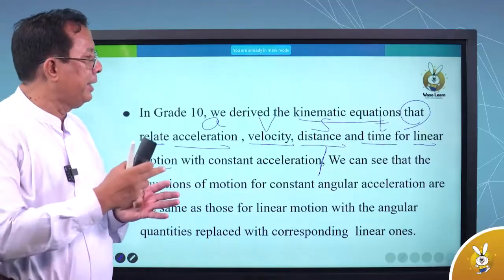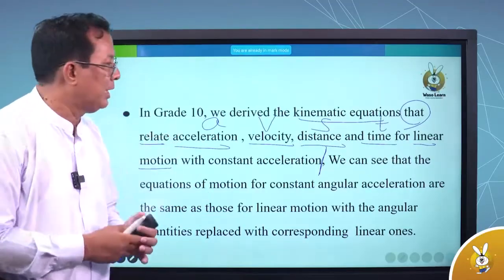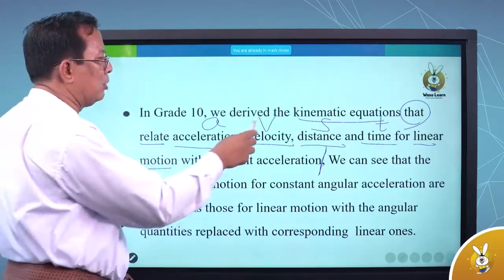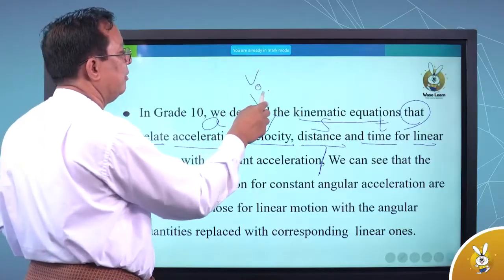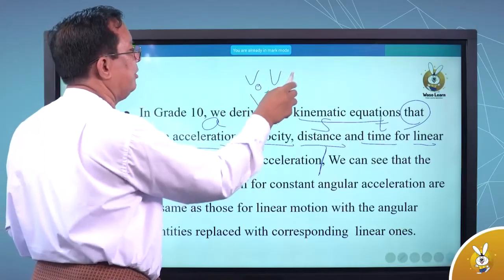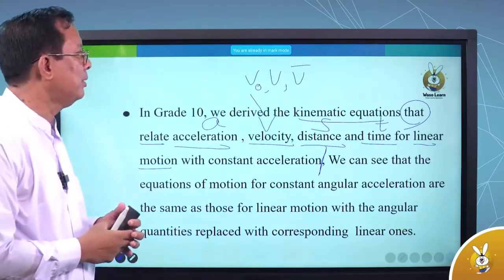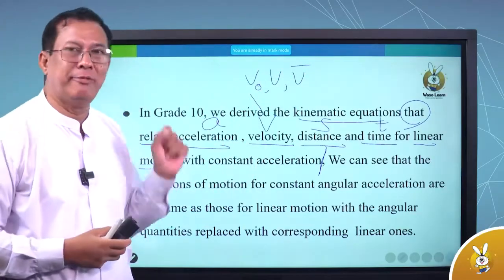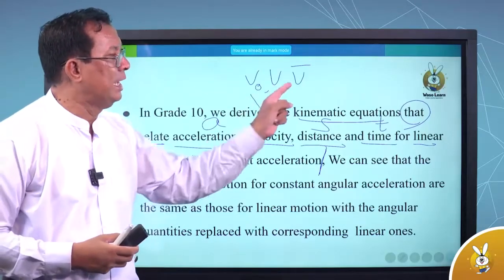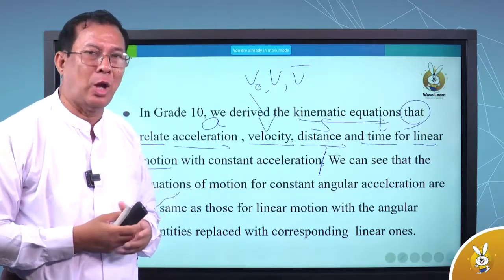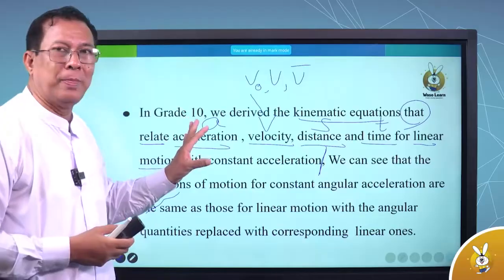A, V, S, D. V — V bar. Initial velocity, final velocity, every velocity. How we know — the real-link.